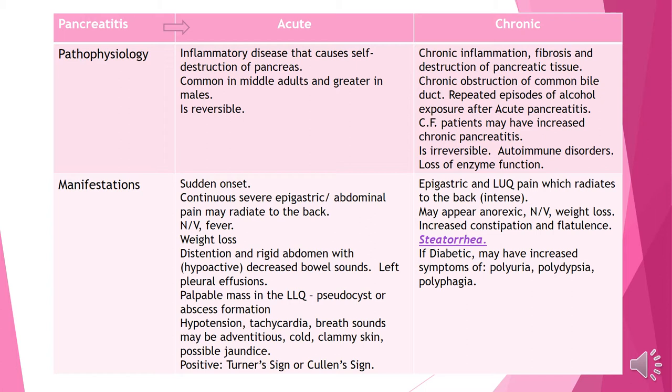These patients are going to be hypotensive and tachycardic. They may have adventitious breath sounds and labored breathing, because an inflammatory process pushing up on the diaphragm decreases the ability to take deep breaths. Patients may also be cold and clammy, and may have jaundice if there is any liver, gallstone, or gallbladder involvement. They will typically have a Turner sign or Cullen sign within 24 to 48 hours.